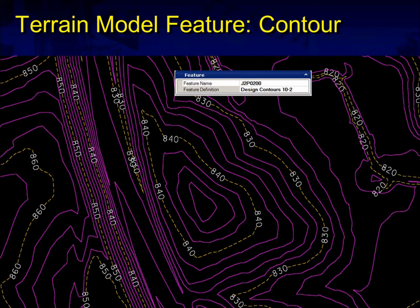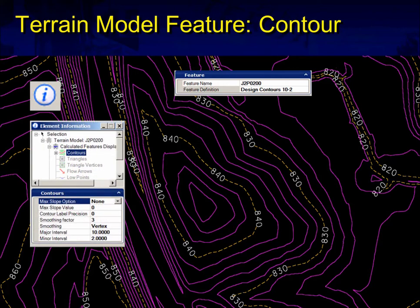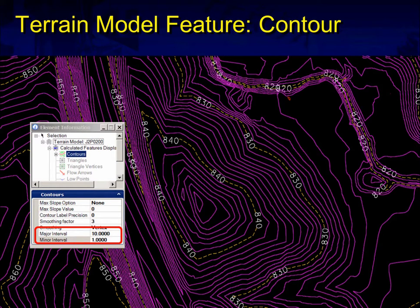Here's an example of some contours set to a 10 major, 10 minor interval. You can use the information button and select those contours to drill down into the information and modify the major and minor intervals on the fly. We hit the information button, selected the contours, and drilled down into the terrain model — the name of the terrain model is J2P0200. Under Calculated Feature Display Contours, the major and minor intervals are displayed. In this box you can change the intervals. If I change that to 10 and 1, you can see how my contours got much tighter — now I have 10 minor intervals between each major.